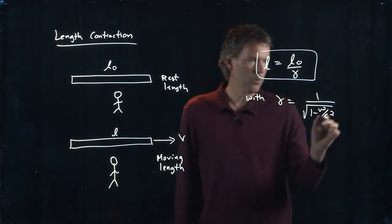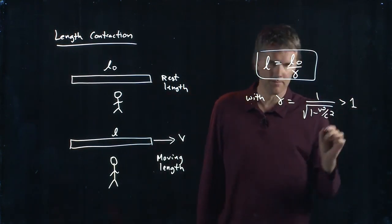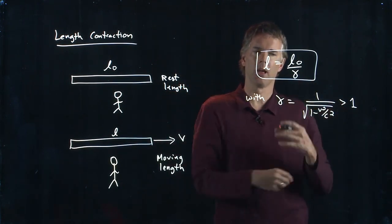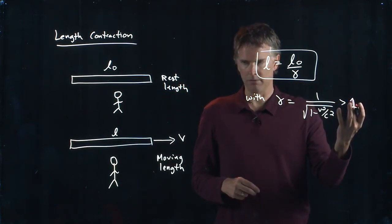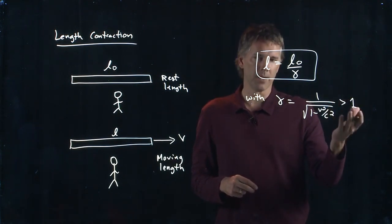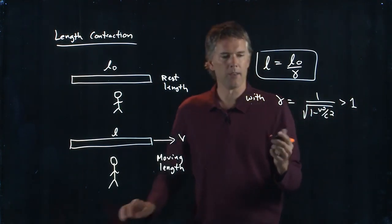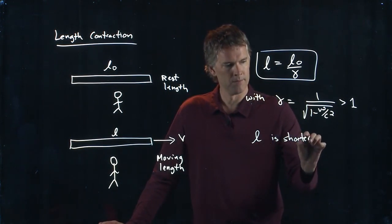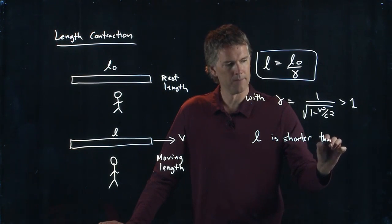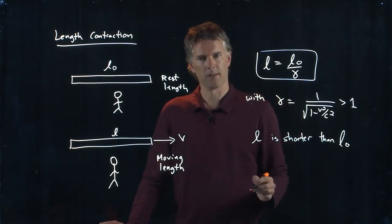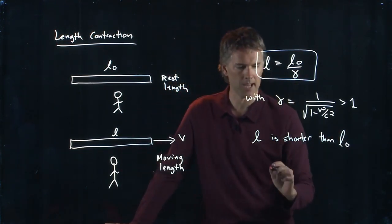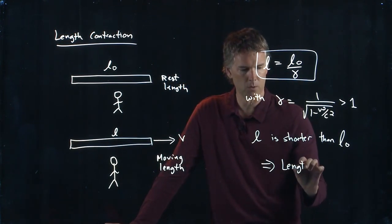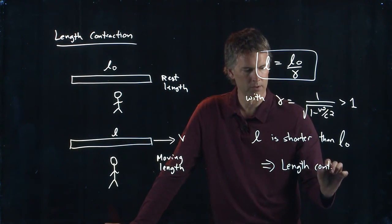Gamma is always bigger than or equal to one. If V is zero, it's one. If V is greater than zero, then gamma is bigger than one. So L is shorter than L-naught by this factor gamma. This is known as length contraction or Lorentz contraction.